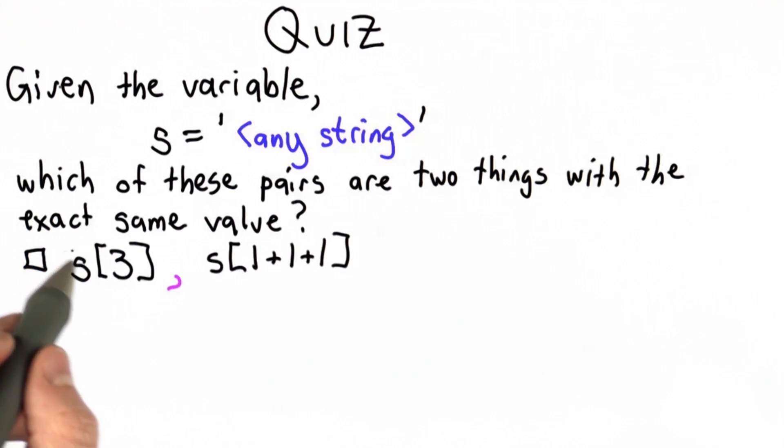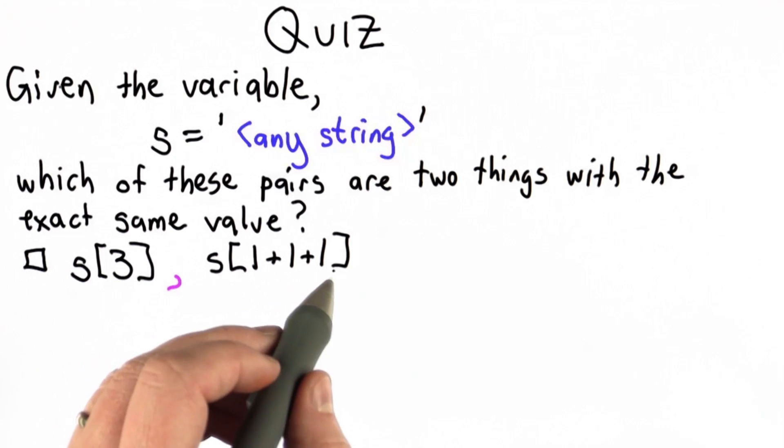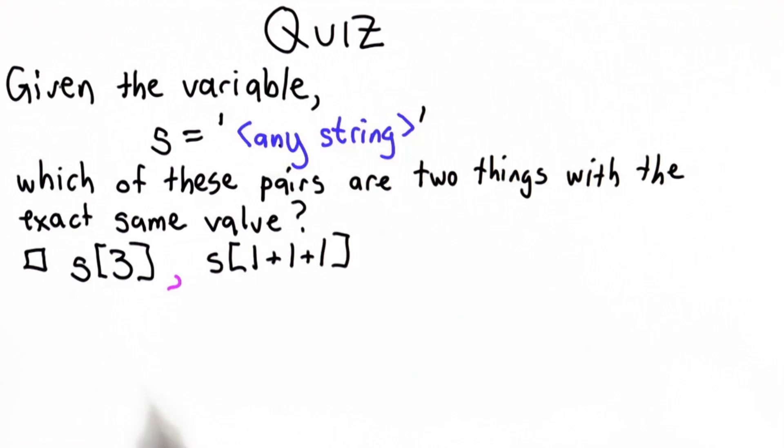The first choice is s index 3 paired with s index 1 plus 1 plus 1. For any string that we choose for s, those two always have exactly the same value, so you should check this box.